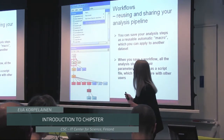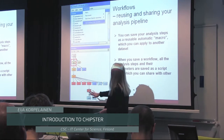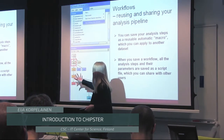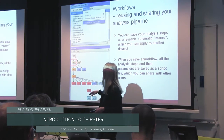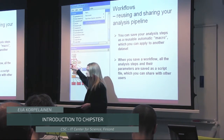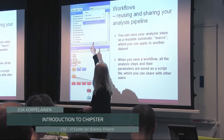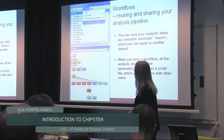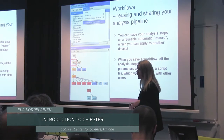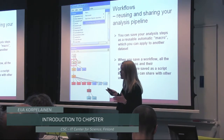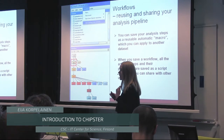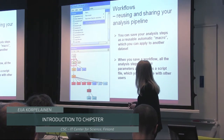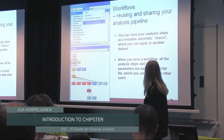Now to the workflows — this is very simple. Let's say I have done these analysis steps here and I want to save this as a workflow. All I do is select the beginning point, and then in the menu I have the option 'save starting from selected' — and that's all there is. It creates a script, a text file, which I can then give to somebody else so they can run it in their Chipster instance, or I can run it myself.